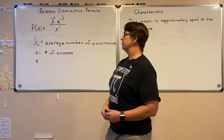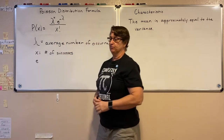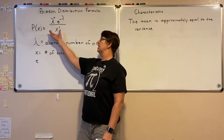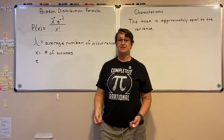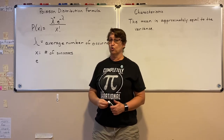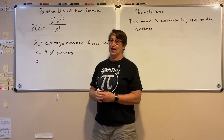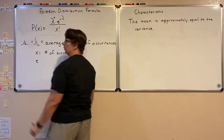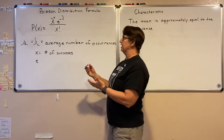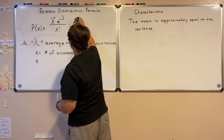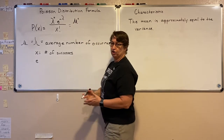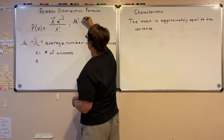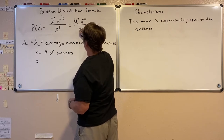Lambda represents the average number of occurrences. When you look on the internet at the Poisson formula, it shows up with the lambda symbol. But we already have a symbol for the average — mu. So when I talk about this Poisson distribution, I like to just use mu. I'm going to replace all the lambdas in this formula with mu, because they're the same thing.